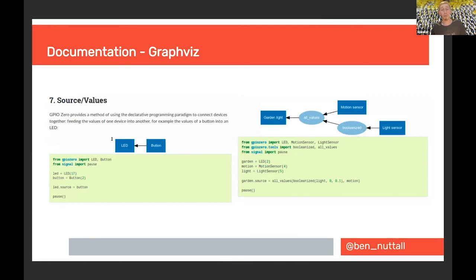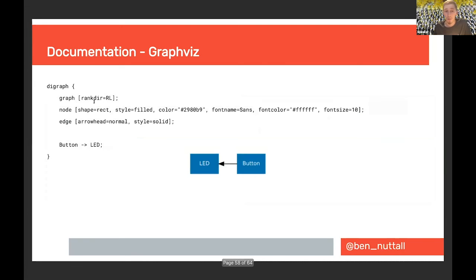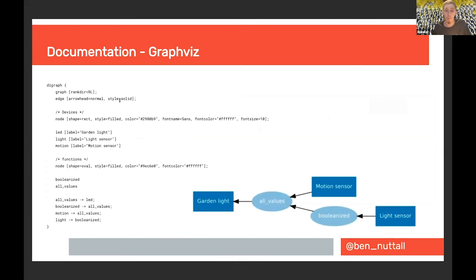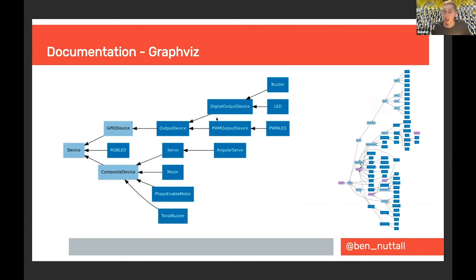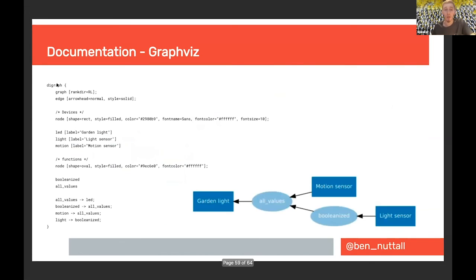There's a project called Graphviz which allows you to generate graphs and diagrams that might supplement your documentation. It's a little obtuse to learn, but essentially you describe how a diagram looks — for example, the word 'button' pointing to the word 'LED' — using graph element types. I've used it for automatically generating class diagrams within the GPIOzero library. The source code for the diagrams lives within your repository alongside your code.